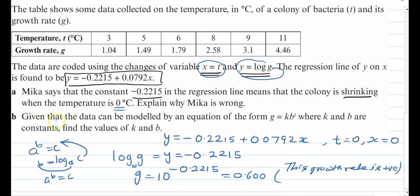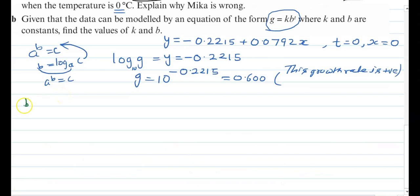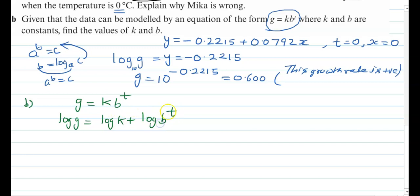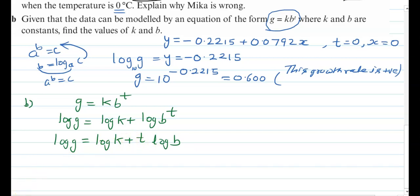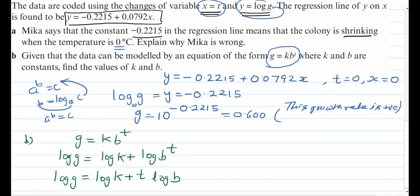For part b, given that the data can be modelled by the equation g = kb^t, where k and b are constants, we need to find the values of k and b. Taking log both sides of g = kb^t gives log g = log k + t log b.